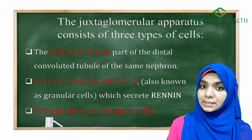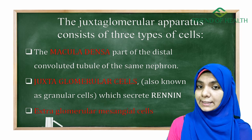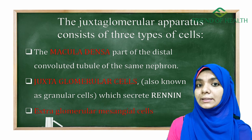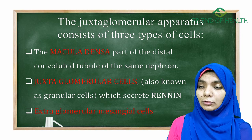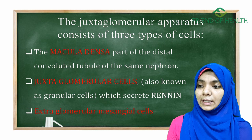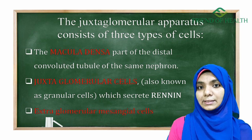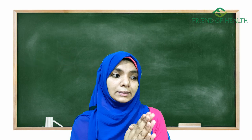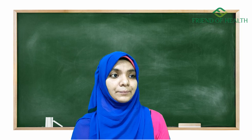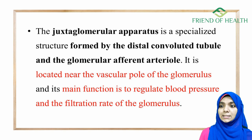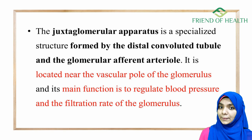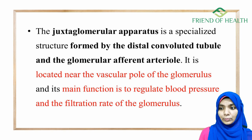The next component is juxtaglomerular cells, also known as granular cells. Renin is specifically secreted from juxtaglomerular cells. The third component is extraglomerular mesangial cells. These three together form the juxtaglomerular apparatus. It is a specialized structure formed by the distal convoluted tubule and the glomerular afferent arteriole, located near the vascular pole of the glomerulus. Its main function is to regulate blood pressure and the glomerular filtration rate.